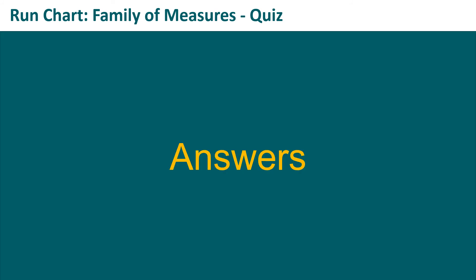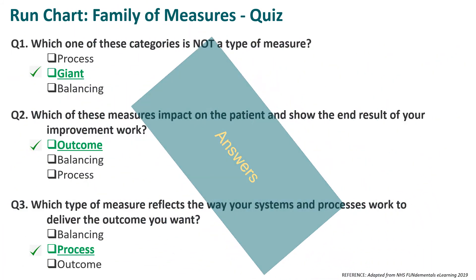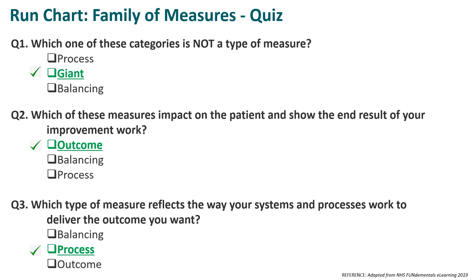The answers to the first three questions: Question one — which of these categories is not a type of measure? The answer is giant. Question two — which of these measures impacts the patient and shows the end result of your improvement work? That's an outcome measure. Question three — which type of measure reflects the way your systems and processes work to deliver the outcome you want? That's a process measure.